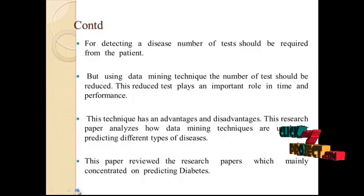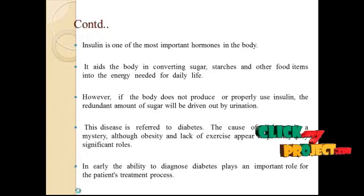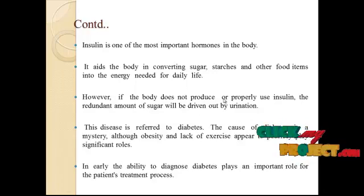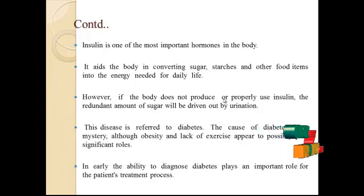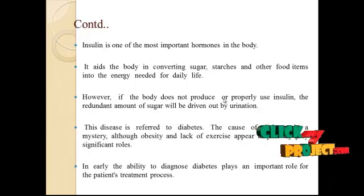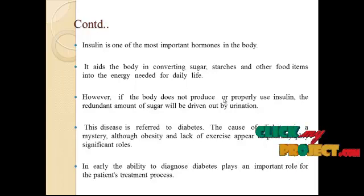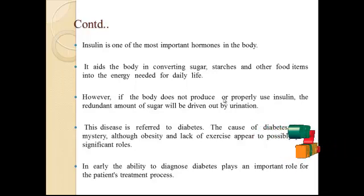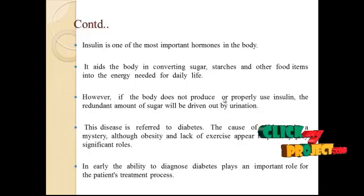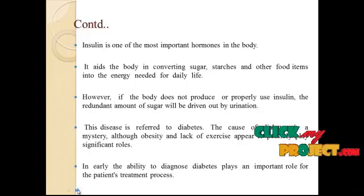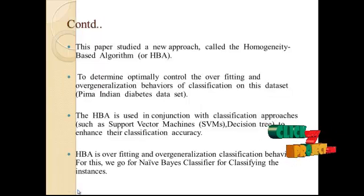This paper reviewed reference papers mainly focused on predicting diabetes. Insulin is one of the most important hormones in the body. It aids the body in converting sugar, carbohydrates, and other food items into energy. However, if the body doesn't produce or properly use insulin, a redundant amount of sugar will be excreted through urination — this is referred to as diabetes. The cost of diabetes is growing, with obesity and lack of exercise playing a significant role. The ability to diagnose diabetes plays an important role in the patient's treatment process.